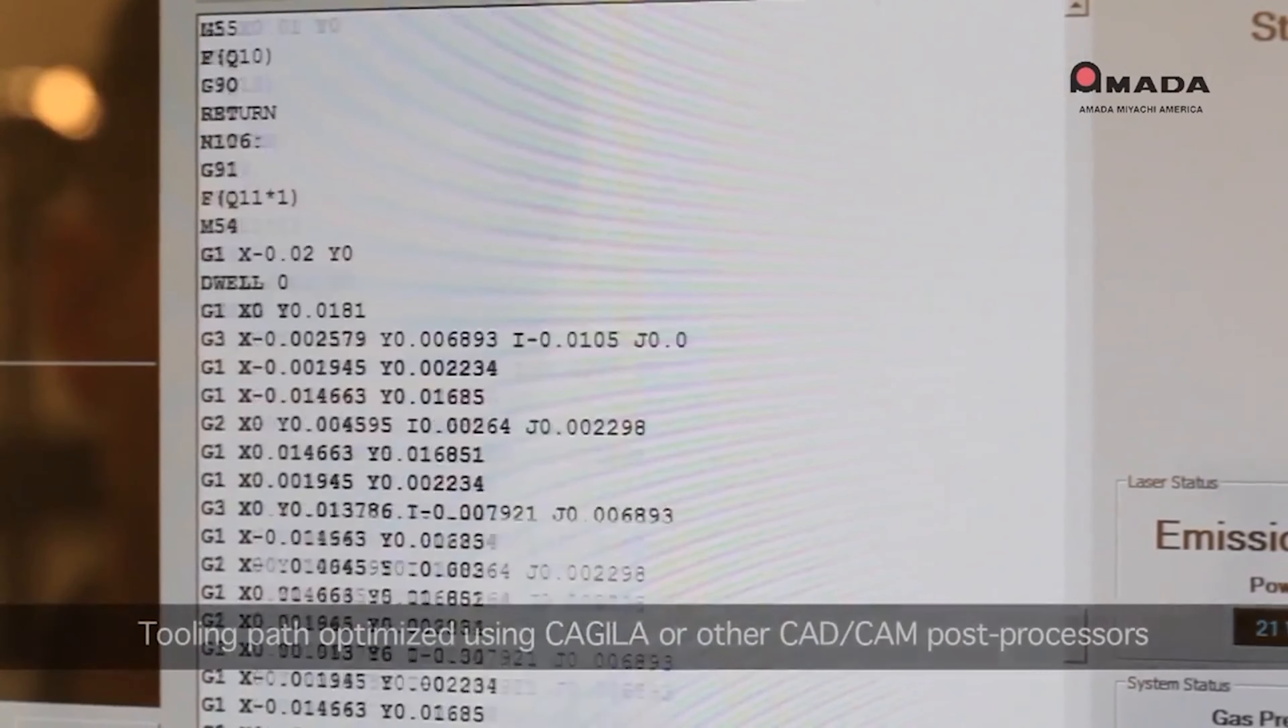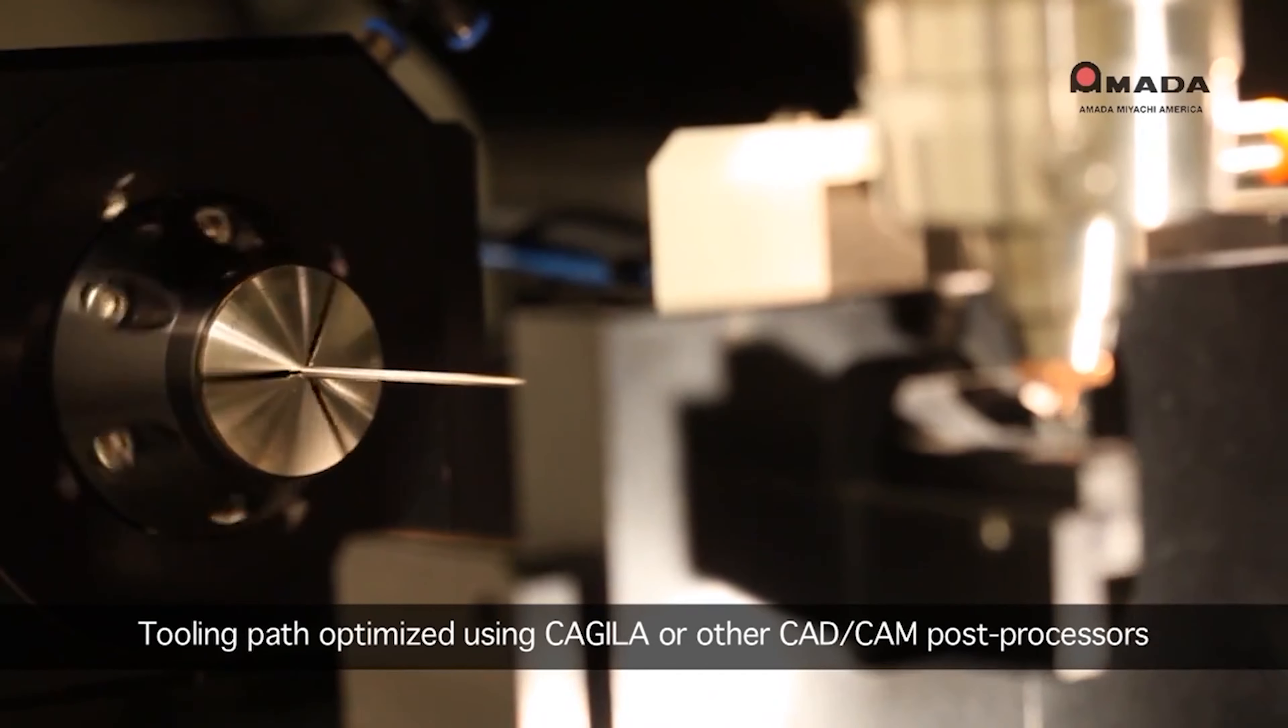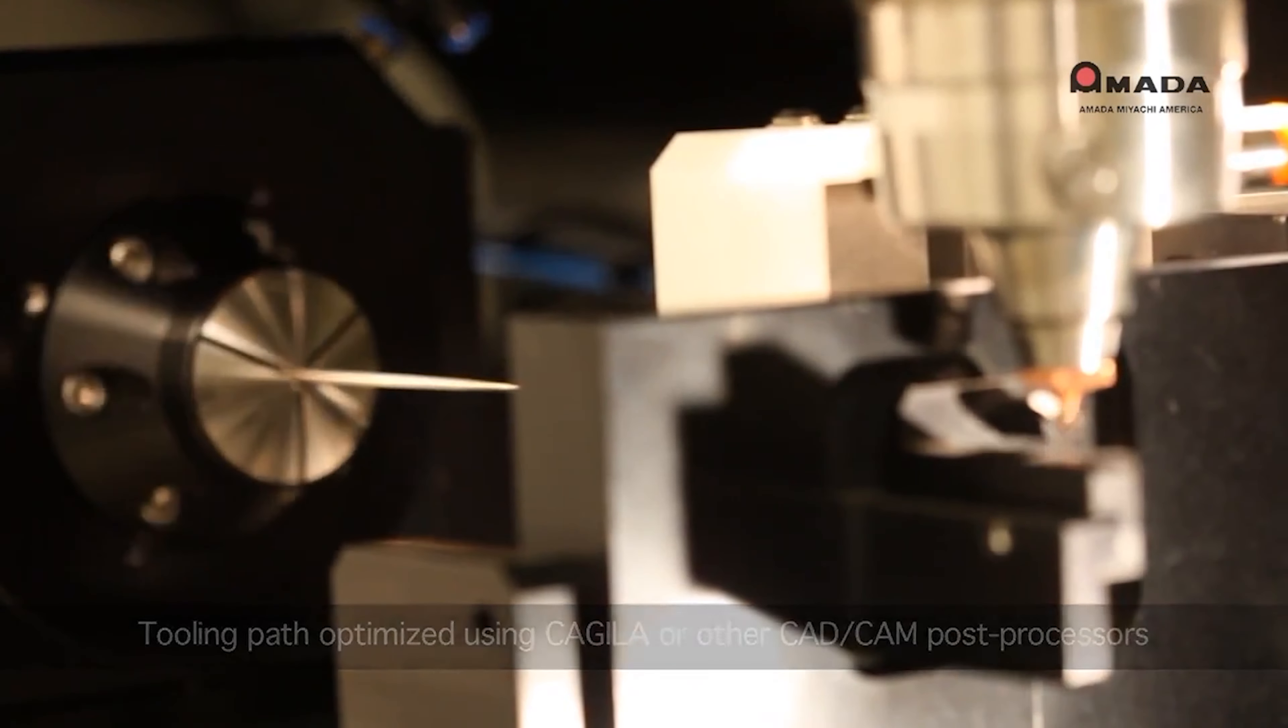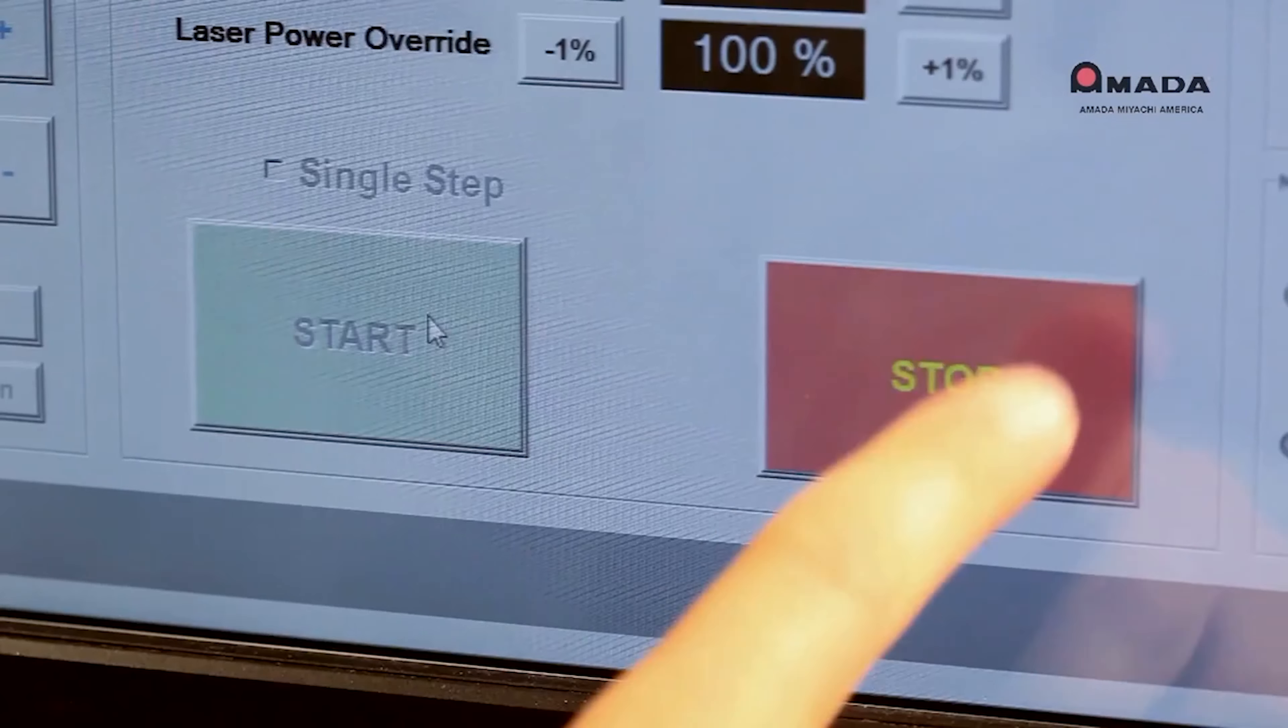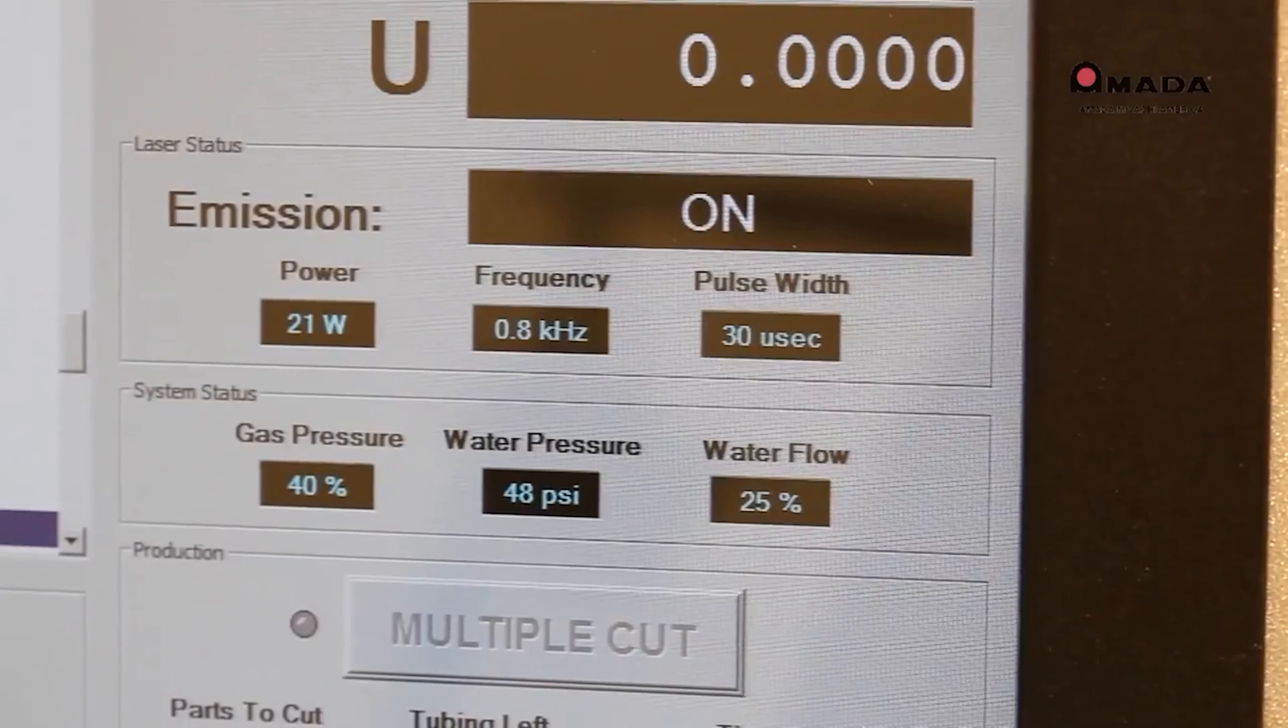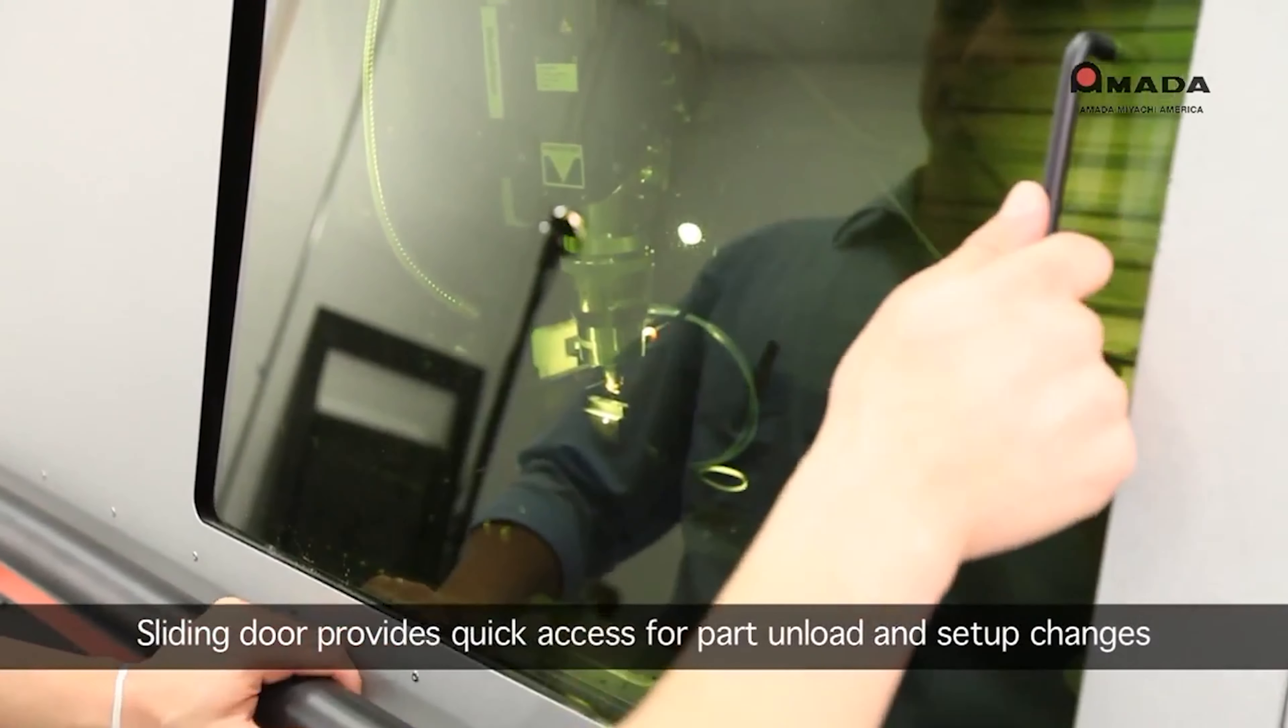In micro laser cutting, we mostly use two types of lasers. One is continuous wave fiber lasers for cutting most of the metal parts, and ultra-short pulse lasers for cutting most of the non-metals, like various types of plastic grids, polymers, etc.